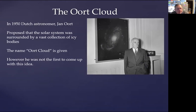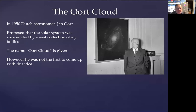It goes back mostly to this guy Jan, who was the first to propose that the solar system might have this enormous cloud of icy material around it, way out in the deep parts at the edge of the solar system. He gave it the name the Oort Cloud — or other people decided to call it after him — because he was quite vocal about it in the 1950s, but the idea goes back a little further.